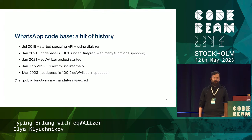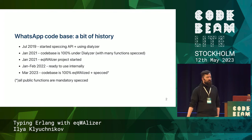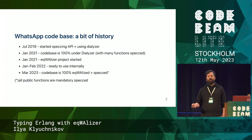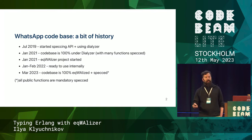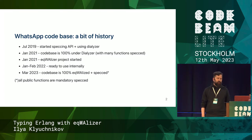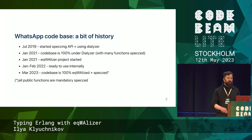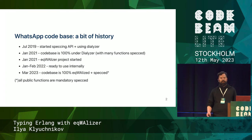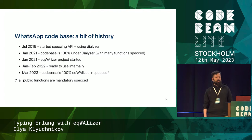A small history of the WhatsApp code base: four years ago, organically in our code base, we started embracing APIs — started thinking in functions, primarily public exported functions. We also started using Dialyzer. Then, in less than two years, we got 100% of our code base under Dialyzer, with many functions specced. At the same time, we started development of Eqwalizer.